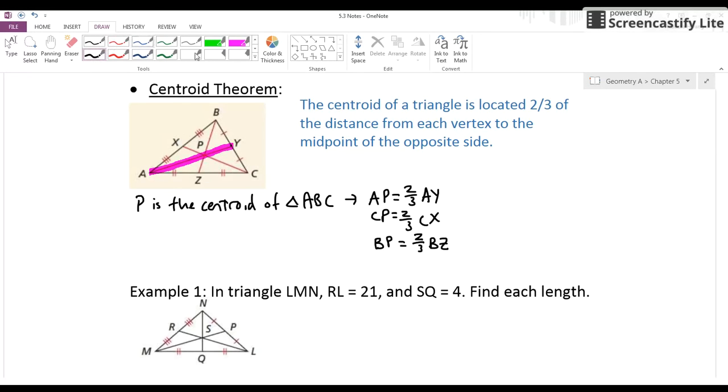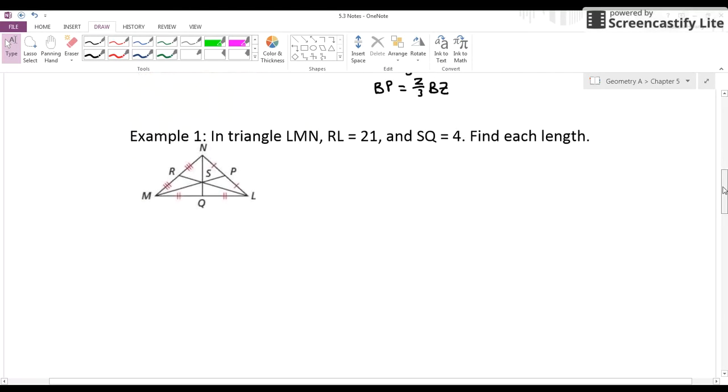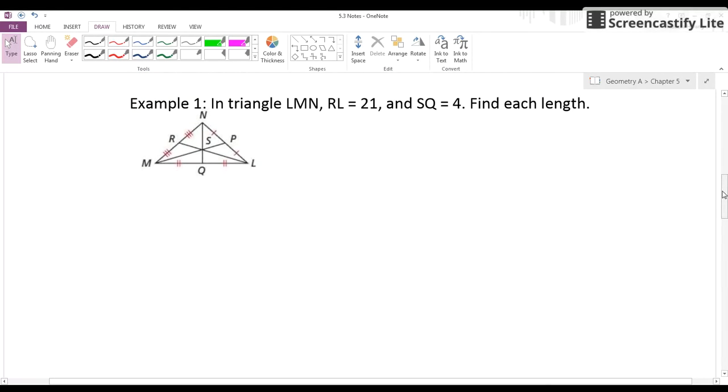Let's take a look at the first example. Example one, in triangle LMN, RL is 21, SQ is 4, find each length. Remember, when we're dealing with points of concurrency, it's really important for you to identify what do we have. Incenter, circumcenter, centroid, and what we're going to look at later, orthocenter, because that's going to help you figure out the relationship you're using.